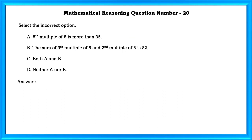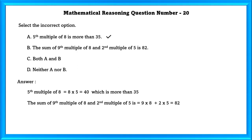Mathematical reasoning question number 20. Select the incorrect option. The fifth multiple of 8 is equal to 40, which is more than 35, so that is true. The sum of the ninth multiple of 8 and the second multiple of 5 is equal to 9 × 8 + 2 × 5, which equals 82. That is also true. Since they asked for the incorrect option, the answer is neither A nor B.